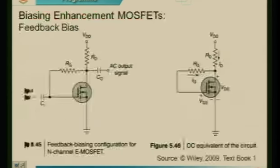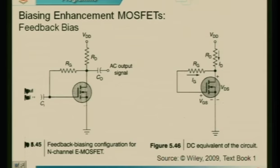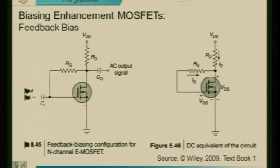Continuing further, just like in the case of depletion MOSFETs, here also we have two types of biasing for enhancement MOSFETs. The first one was called self-bias; here we are going to call it feedback bias. The primary difference is in the way you connect the supply to the gate terminal of the MOSFET.